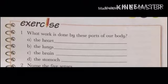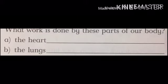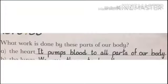Number 1: what work is done by these parts of our body? We have to write what are the body parts given and what is the function of each. Part A, the heart. What is the function of the heart? The answer is: it pumps blood to all parts of our body.